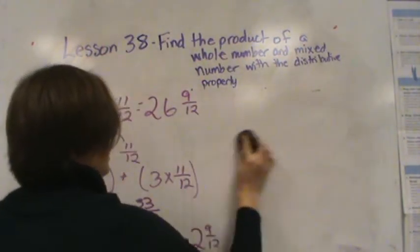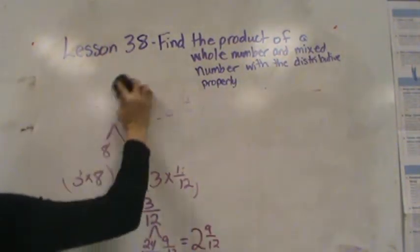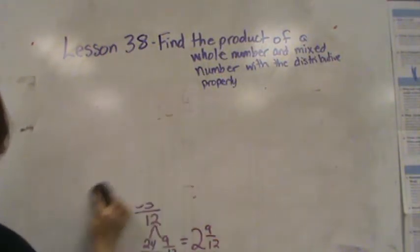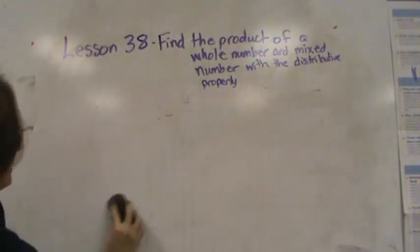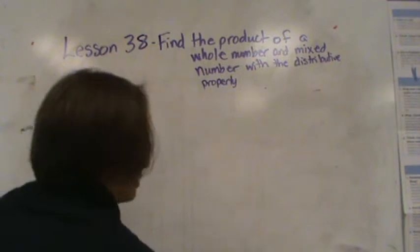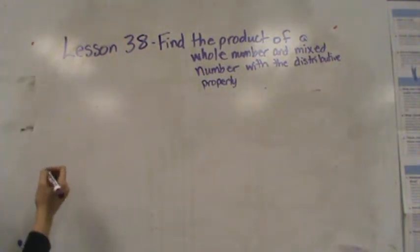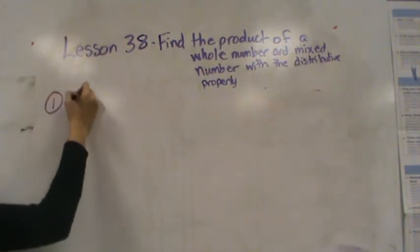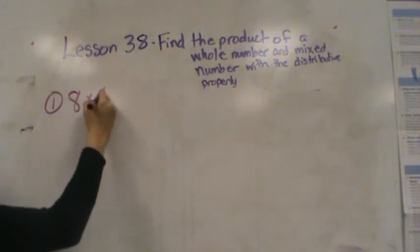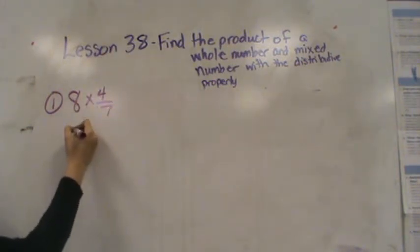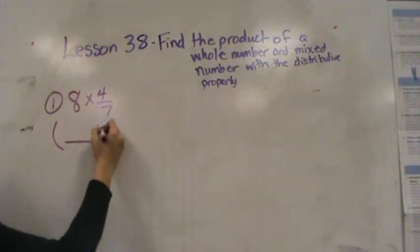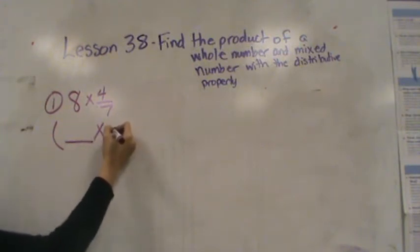All right, now it is your turn. I have three problems for you. Make sure that you use the same strategy that you saw in the video and your three problems are 8 times 4 sevenths. Here I'm going to ask you to fill in these blanks and then solve.